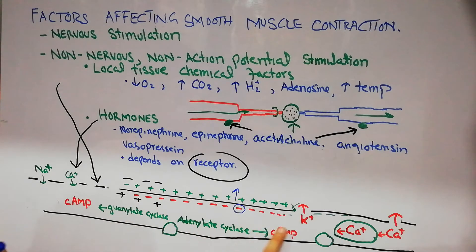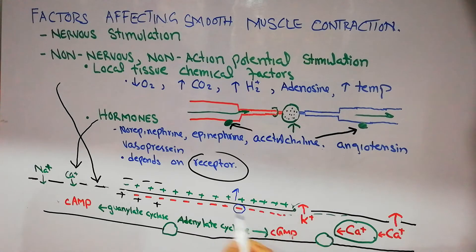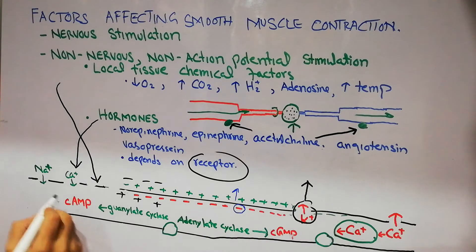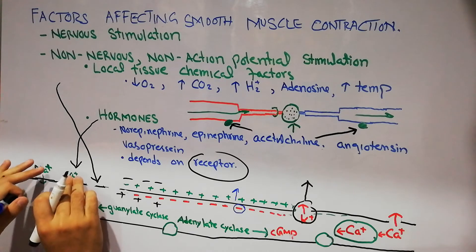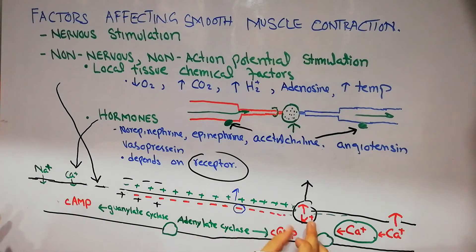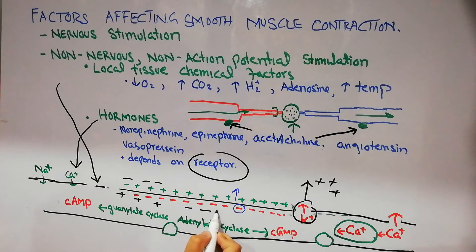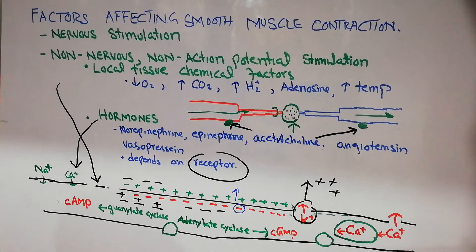For repolarization or hyperpolarization to cause inhibition of smooth muscle contraction, the potassium channel can be opened so potassium moves out. Similarly, calcium and sodium channels can be closed. If no positive charge is coming in and positive charge is moving out, negativity returns inside the smooth muscle fiber, contraction stops, and relaxation occurs.